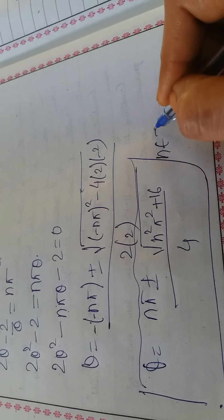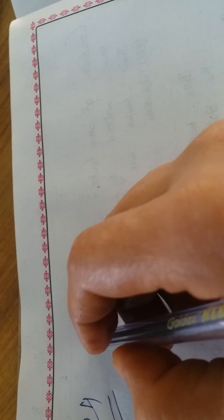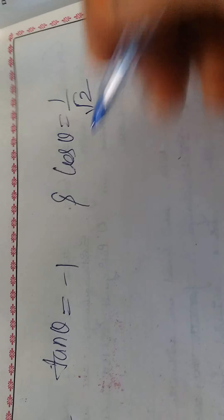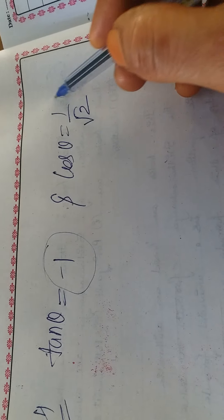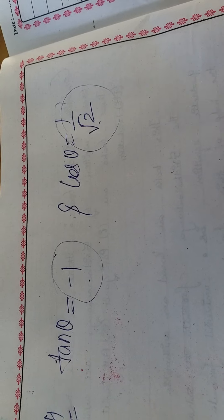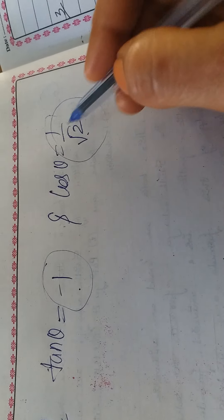Question 24 (last question): Find the most general value of θ satisfying both equations simultaneously: tanθ = -1 and cosθ = 1/√2. We need the common solution — the quadrant where tan is negative AND cos is positive.